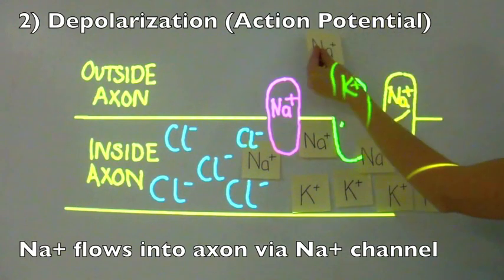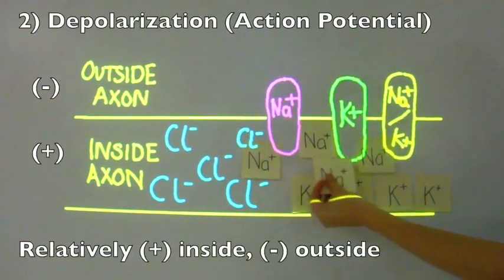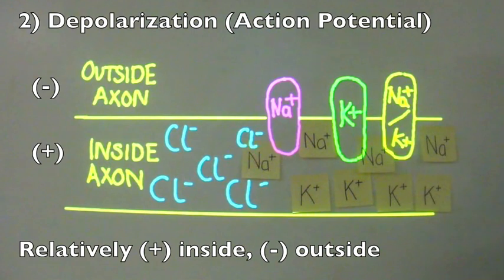The channel for the sodium ions is represented in pink. The net result is that the inside of the axon becomes relatively positively charged.